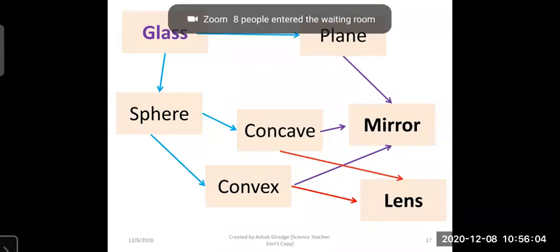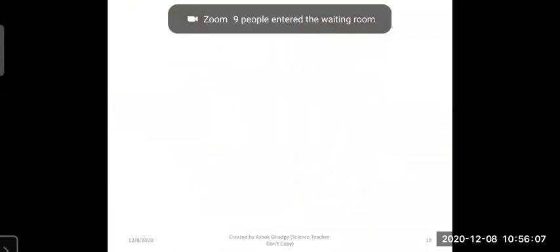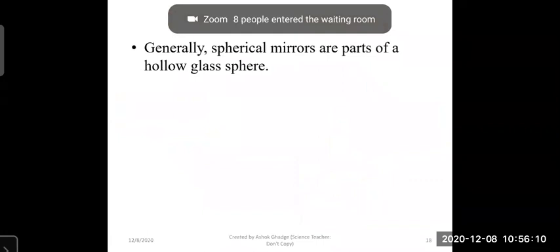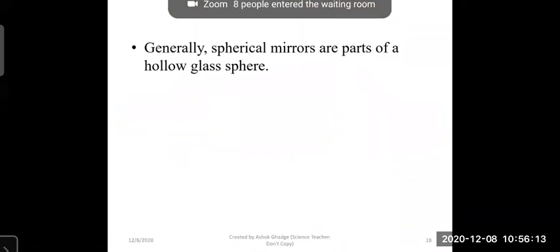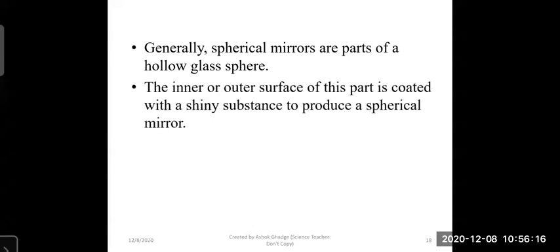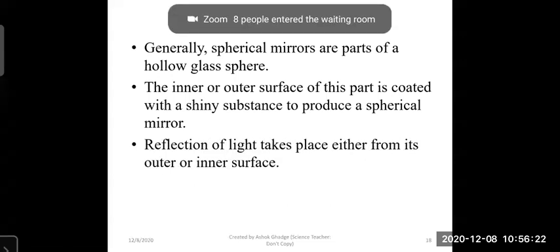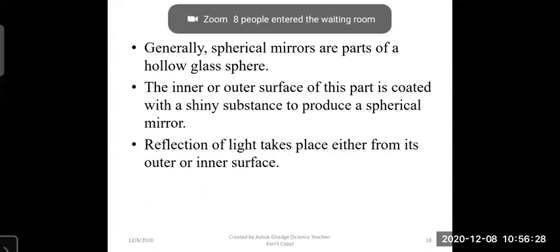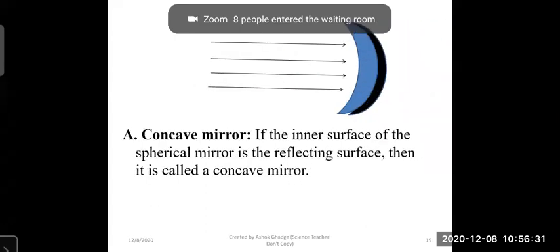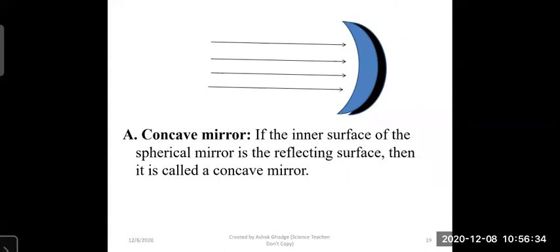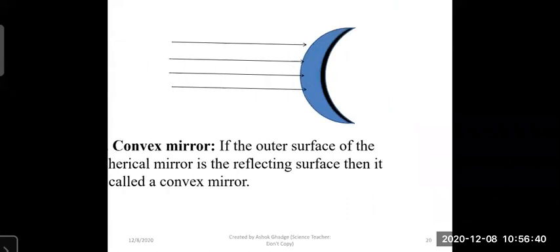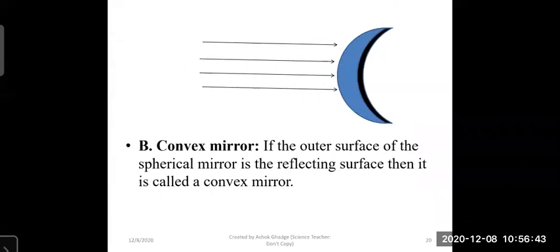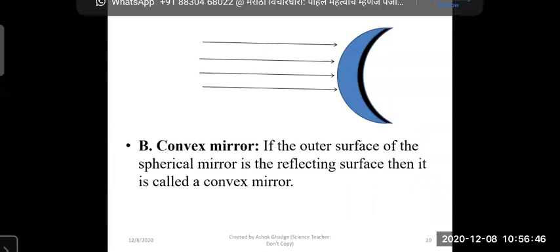Spherical mirrors are generally made from a hollow glass sphere. The inner or outer surface of a part of the sphere is coated with a shiny substance to produce the spherical mirror. If reflection occurs from the inner surface, it is called a concave mirror. If reflection occurs from the outer surface, it is called a convex mirror.